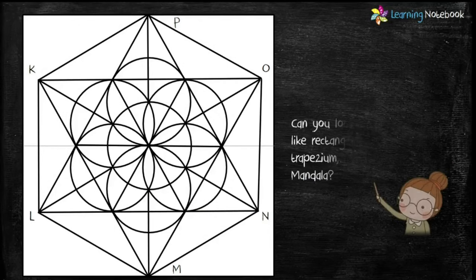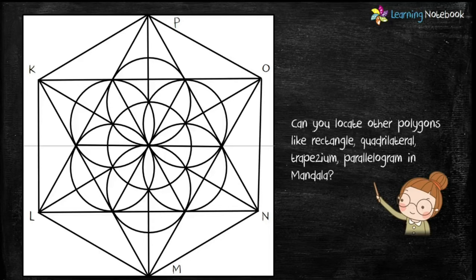Students, we have already seen polygons like triangle, hexagon and rhombus in this mandala design. Now, can you locate other polygons like rectangle, quadrilateral, trapezium and parallelogram in this design? Let me show you.